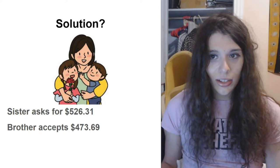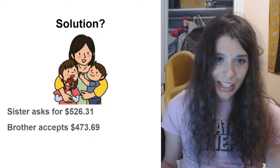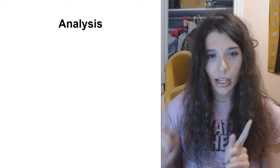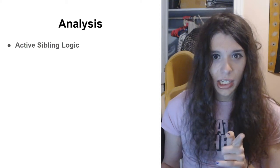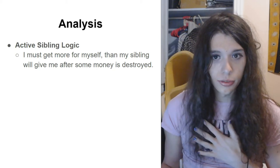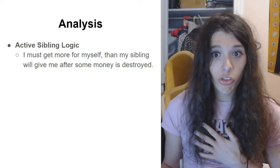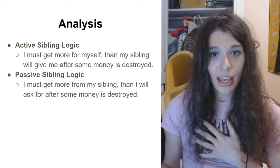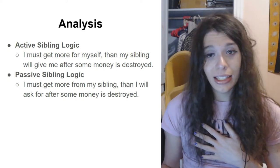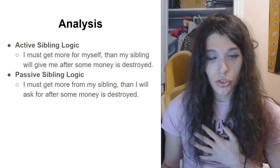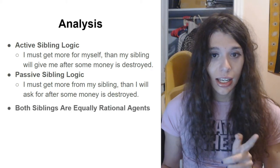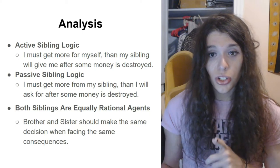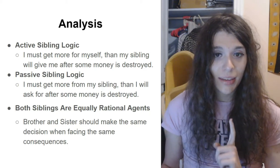So to understand the solution, we have to understand how to analyze the game. We can derive the solution from understanding the following consequences. The active sibling logic: I must get more for myself than my sibling will give me after some amount of money is destroyed. The passive sibling logic: I must get more from my sibling than I will ask after some money is destroyed. Additionally, we have to understand that both siblings are equally rational agents. Brother and sister should make the same decisions when facing the same consequences.